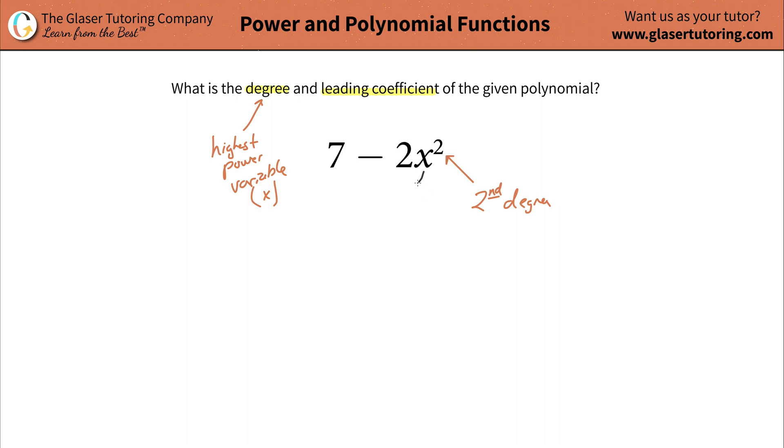So in other words, this number right here, the 2, is going to be the leading coefficient. Now, I know it doesn't look like it's leading, but you have to consider that the leading coefficient will always be correlated to the highest degreed variable.